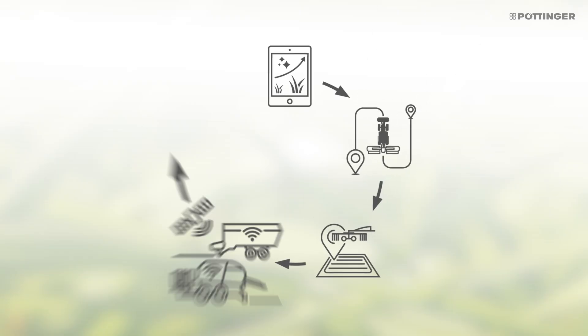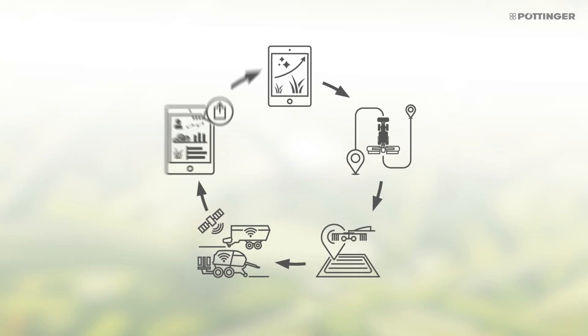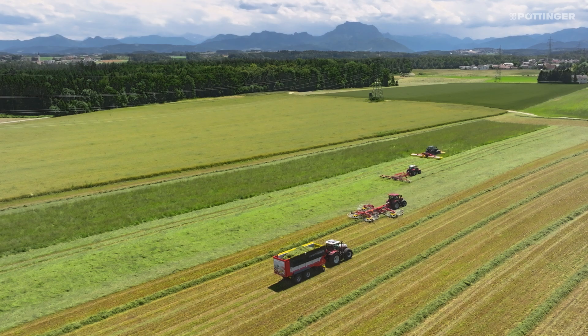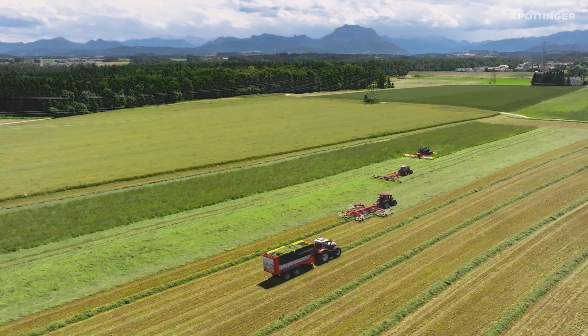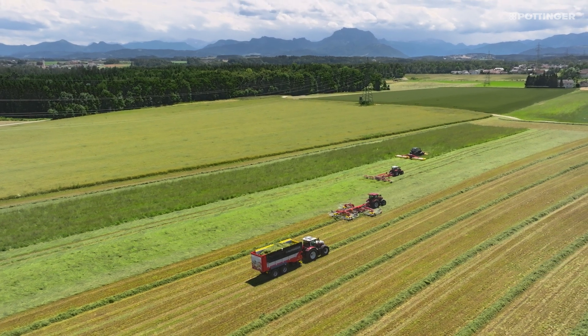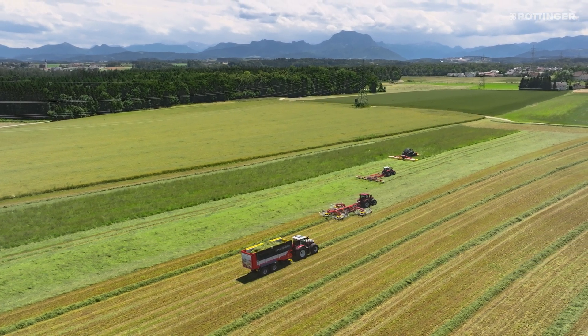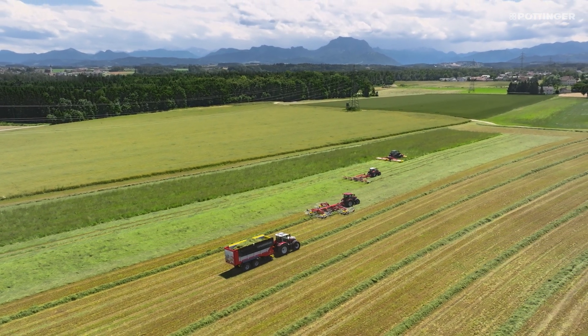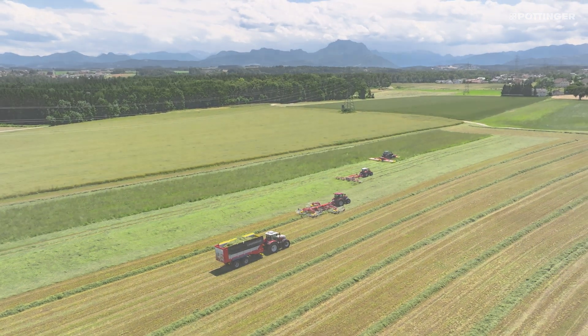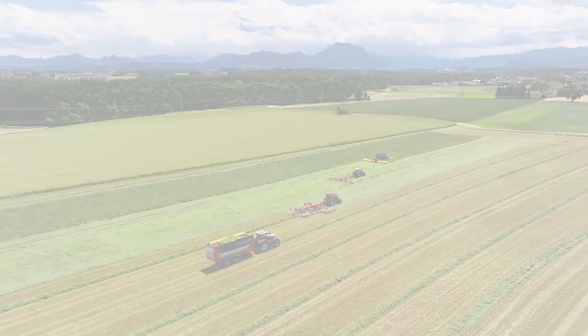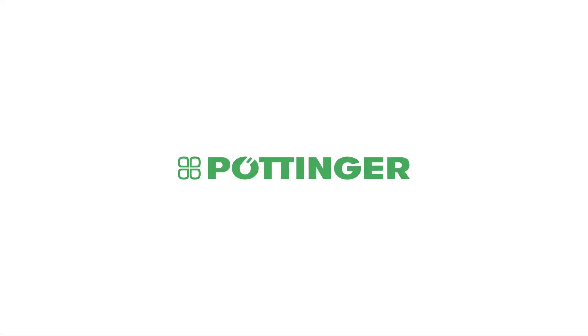Ultimately, Smart Harvest Chain networks planning before, logistics during, and data analysis after the harvest, and also provides a forecasting model for the next crop — so you achieve a higher output with the same number of machines. More success with Pöttinger.